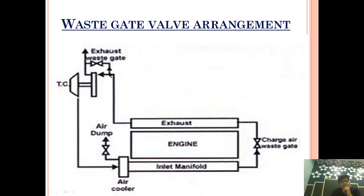Now the compressed air which is being compressed is coming to the scavenge manifold. In this manifold you will see an air dumping arrangement — if the air in the manifold is in excess it can be dumped by this air dumping valve. Apart from that, you can see a charge air waste gate valve arrangement is provided, which is acting as an interlink between the exhaust and inlet manifold.